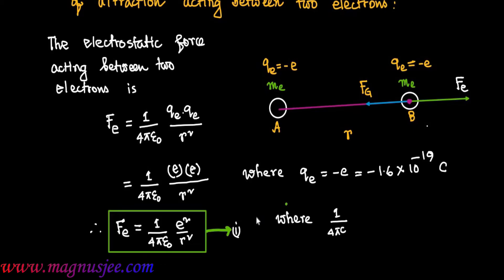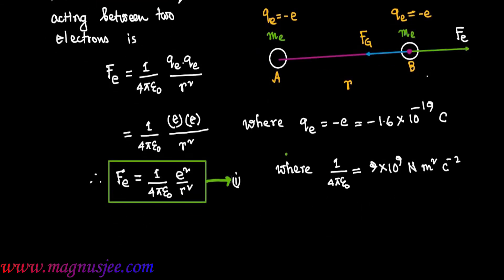Here, 1/4πε₀ = 9 × 10⁹ Newton meter squared Coulomb to the power minus 2.